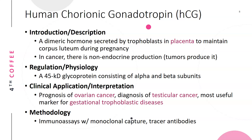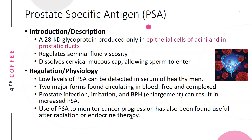Human chorionic gonadotropin (HCG), the pregnancy hormone, is a dimeric hormone secreted by the trophoblast in the placenta to maintain the corpus luteum during pregnancy. In cancer, there is non-endocrine production — tumors produce HCG. It is a 45 kilodalton glycoprotein consisting of alpha and beta subunits. Clinically, it is used in the prognosis of ovarian cancer, diagnosis of testicular cancer, and is the most useful marker for gestational trophoblastic diseases. It is tested via immunoassays with monoclonal capture and tracer antibodies.